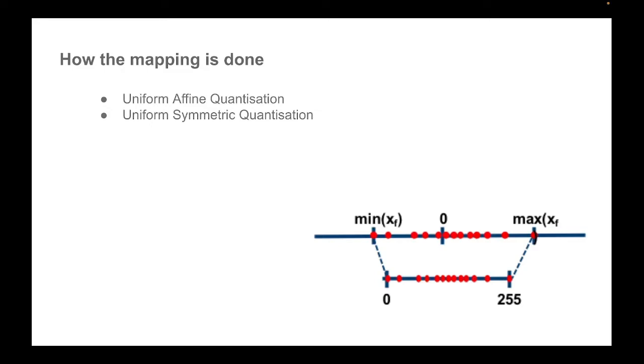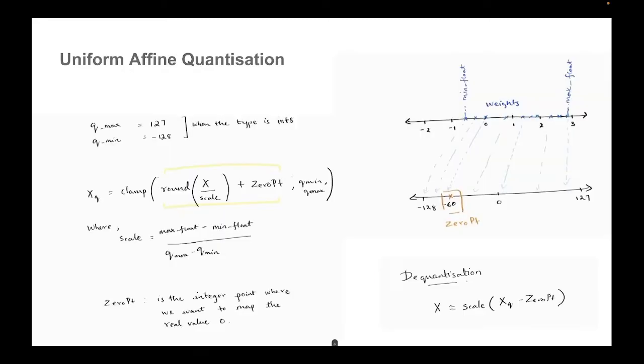So we have a few fundamental techniques that we use to do this mapping, and different quantization mechanisms are built on top of it. And the most common ones are uniform affine quantization and uniform symmetric quantization, which we will look more deep into how they work. So let's take the uniform affine quantization and try to understand how it works. So let's define a few terms.